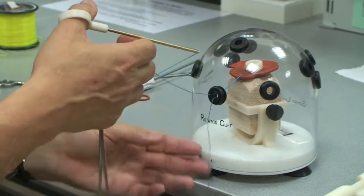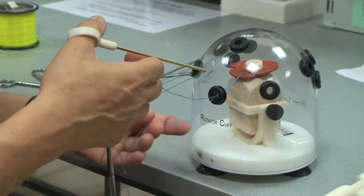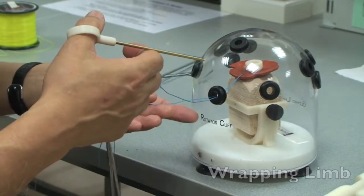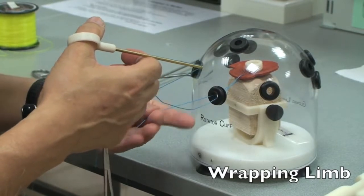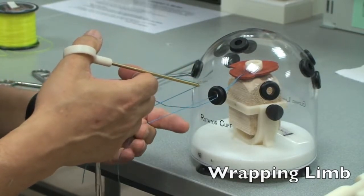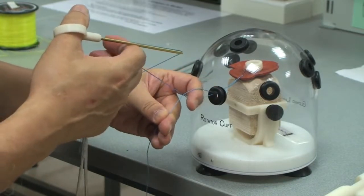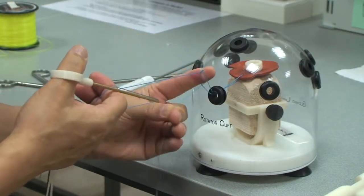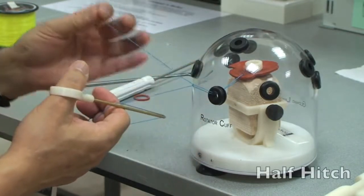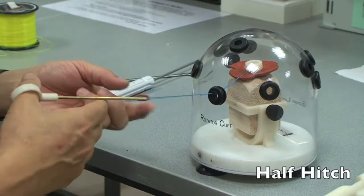Use the index finger. I grab the, what I call the wrapping limb with my thumb and middle finger. The index finger push up, loop around the post, and then flip it with the back of the finger, and then back out. And then pull through. So what I have is a half hitch.